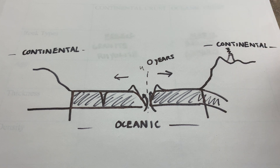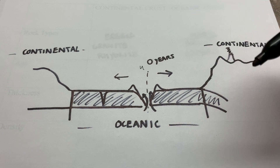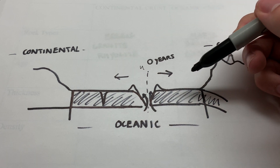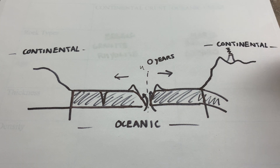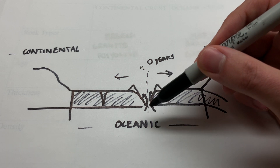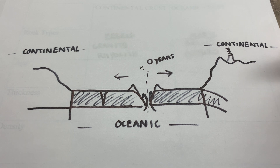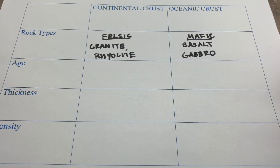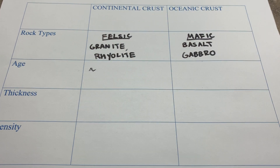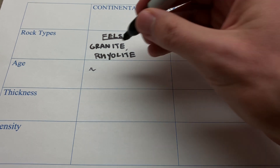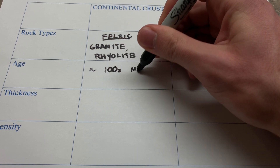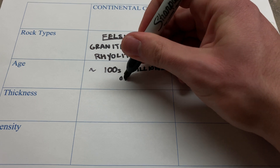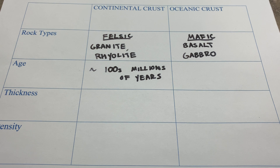If you recall from plate tectonics, the oceanic crust always goes beneath the continental crust. Because of this, oceanic crust can't get that old. As long as there are continents, the oceanic crust will always subduct beneath the continental crust at one of these plate boundaries. The fate of all oceanic crust is to eventually be subducted and then reborn at one of these spreading centers. So the age of oceanic crust is usually only on the order of hundreds of millions of years. To us that's really old, but geologically, maybe not so much.